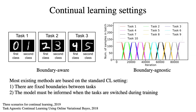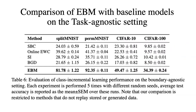We have shown results on the standard continual learning setting, which we call the boundary-aware setting. In this setting, models are first trained on the first task and then move to the second task, and models are told when there is a transition from one task to the next. However, it is more realistic for tasks to change gradually and for models not to know the task boundaries — this is the boundary-agnostic setting, where models learn in a streaming fashion and the data distribution gradually changes over time. Most existing continual learning approaches cannot handle the boundary-agnostic setting because they require task boundaries. We show that the energy-based model can naturally handle both boundary-aware and boundary-agnostic settings, and our energy-based model outperforms baselines by a large margin on the task-agnostic setting.